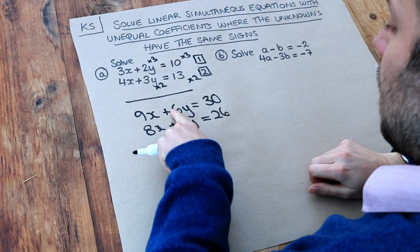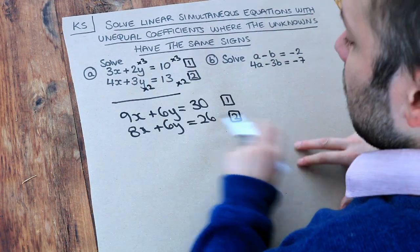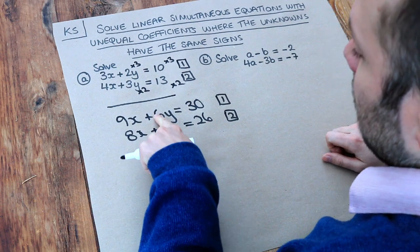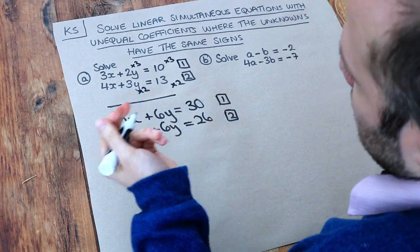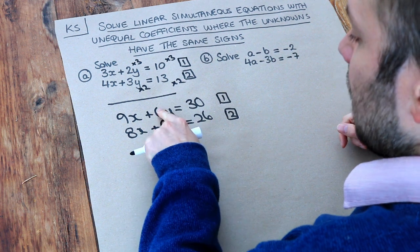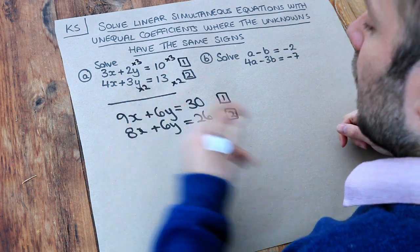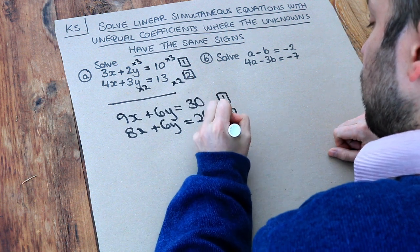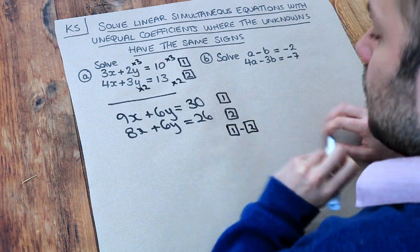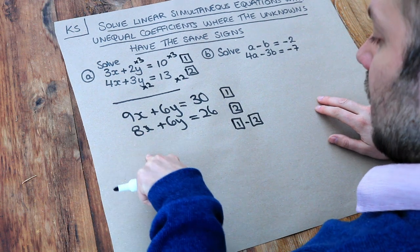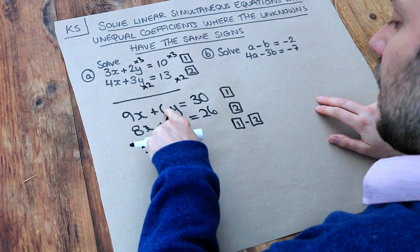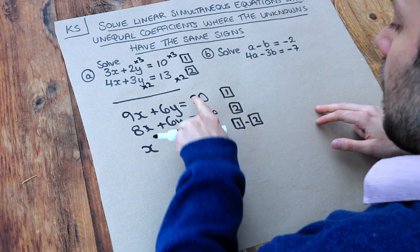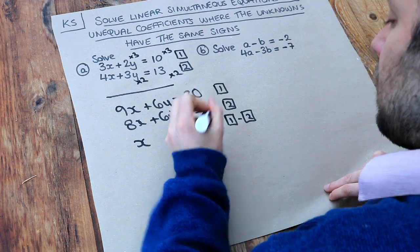Now that's great because these numbers are now the same. And to make those disappear, well, we're going to subtract them. If we add them, 6y plus 6y is going to be 12y, that doesn't help. But if we subtract them, 6y minus 6y, then they're going to disappear, which is what we want to do. We want to eliminate one of the variables. So let's just do equation 1 minus equation 2. 9x minus the 8x is x. 6y minus 6y disappears. That's great, it's eliminated. And 30 minus 26 is 4.